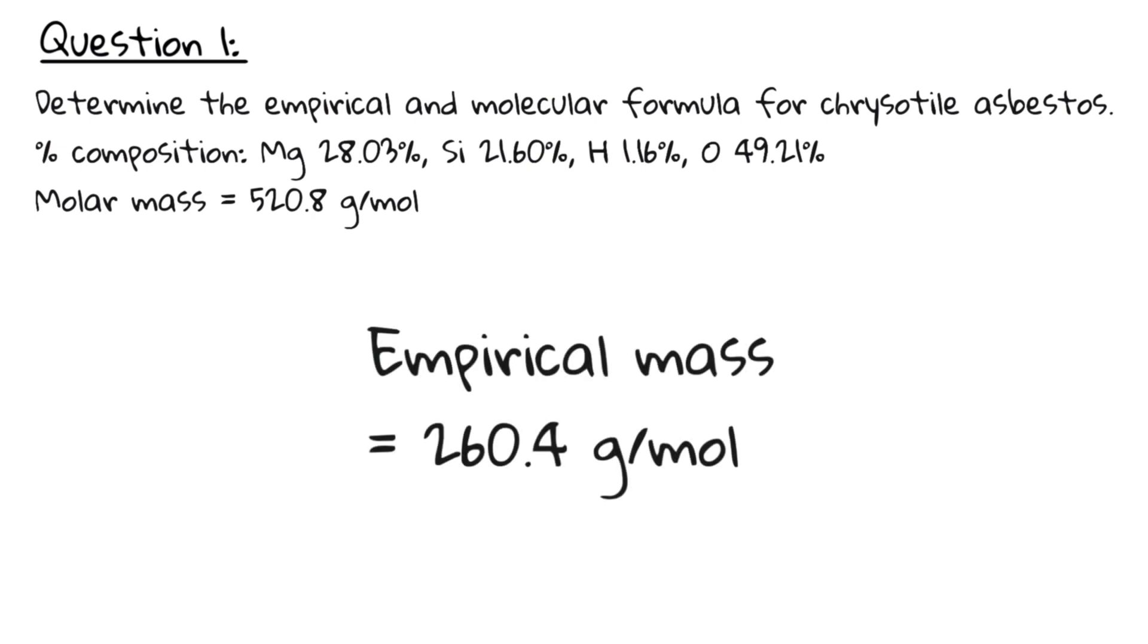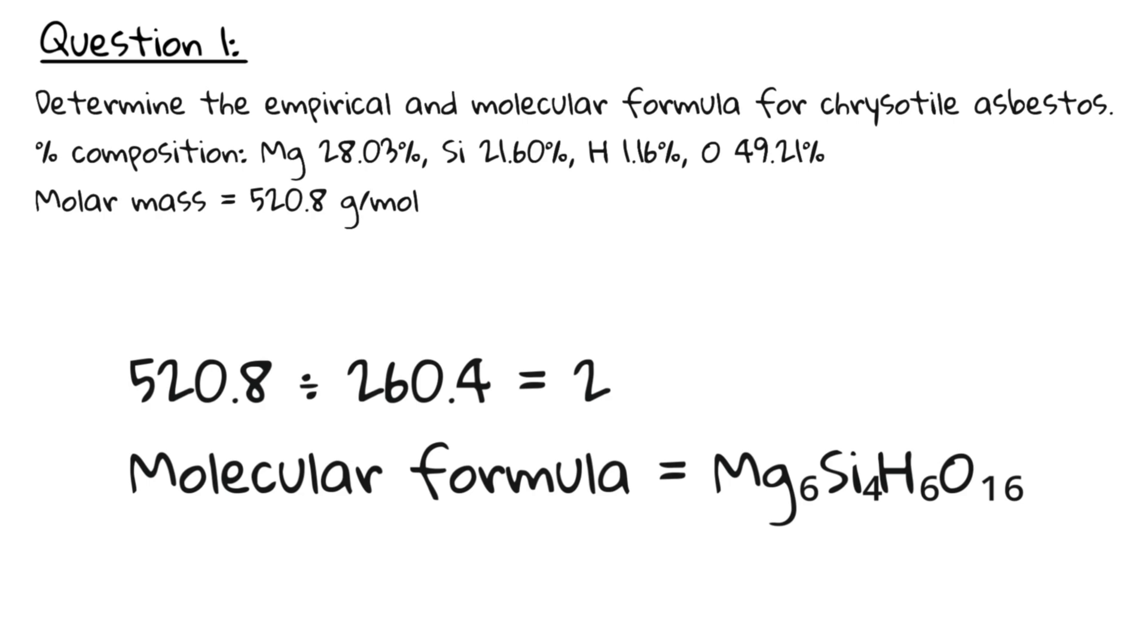Next, we calculate the mass of our empirical formula, 260.4 gram per mole. Now we divide the molar mass by the empirical mass. As the ratio is 2, we simply multiply our empirical formula by 2 to obtain Mg6Si4H6O16.